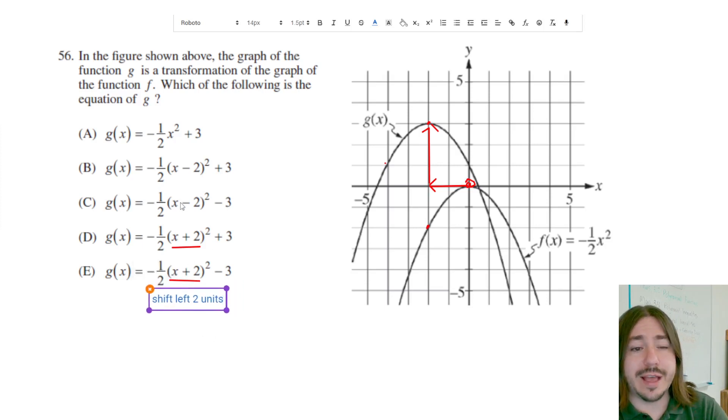If you see x minus 2, that's a shift to the right. So we can eliminate both of these answer choices. We can also eliminate choice A because that does not show a shift to the left or the right.